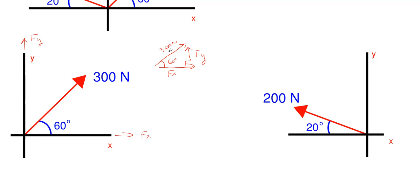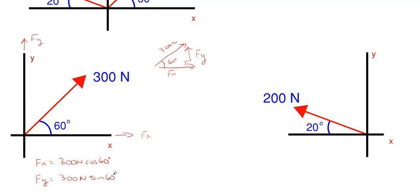If you know the hypotenuse and the angle, how do you find Fx and Fy? Your Fx, since it is adjacent to that angle, is 300 newtons times cosine of 60 degrees — the angle is off the x-axis, so x is adjacent, giving cosine. Your Fy would be 300 newtons times sine of 60 degrees, since the y is opposite that angle.